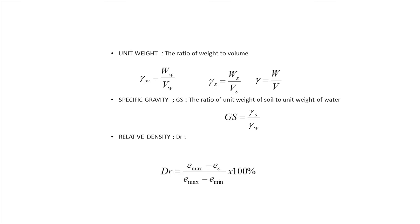Unit weight is the ratio of weight to volume: gamma w equals weight of water divided by volume of water, and gamma s equals weight of solid divided by volume of solid. Similarly, gamma equals total weight of solid mass divided by volume of solid mass. Relative density is defined as (E max minus E zero) divided by (E max minus E min), multiplied by 100, where E max is the maximum void ratio. This is only used for sands.